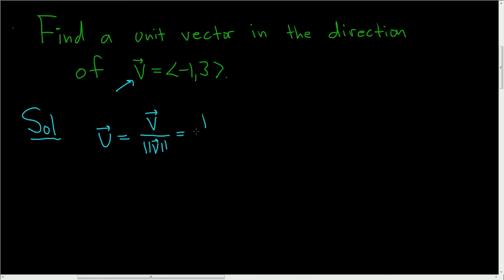You can rewrite this as follows. It's 1 over the magnitude of v times the vector v. So let's go ahead and work this out.